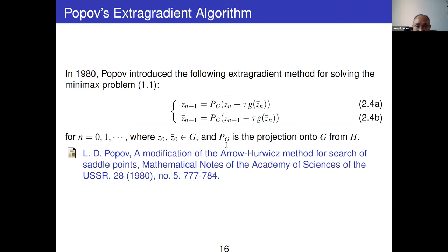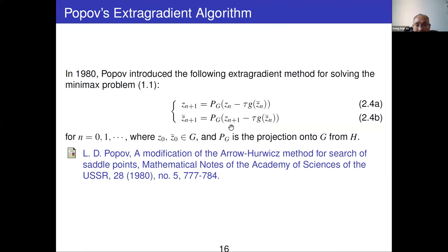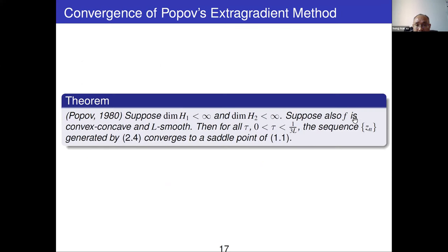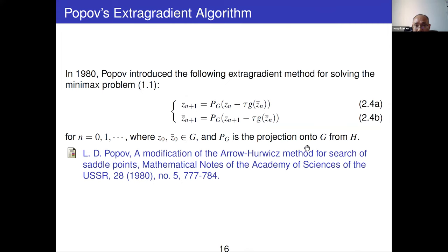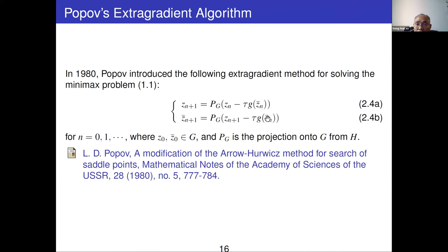Four years later, Popov introduced another EG method, algorithm 2.4, in 1980. Comparing the two EG methods, the way to define z_{n+1} is actually the same — the difference lies in the definition of the middle point z̄_n, which is slightly more complicated in Popov's version. Popov proved convergence in the finite-dimensional case under the same conditions on f, but with a smaller step size: tau between 0 and 1/(3L). The sequence generated by his algorithm also converges to a saddle point of f.